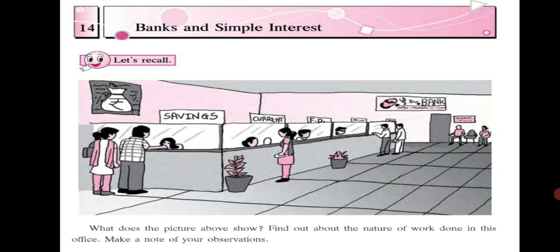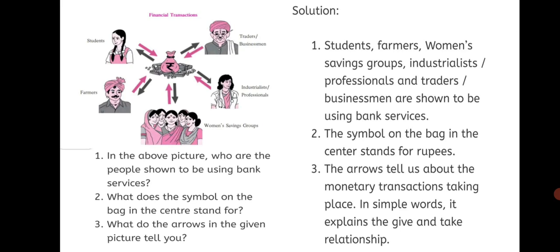It is a financial organization — finance relates to money. In the above picture, who are the people shown to be using bank services? We can see students, farmers, women, saving groups, industrialists, professionals, traders, and businessmen using bank services. The symbol on the bag in the center stands for rupees. The arrows tell us about the monetary transactions taking place — in simple words, the give and take relationship.